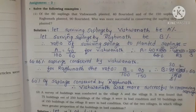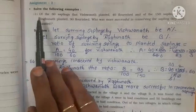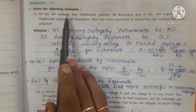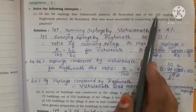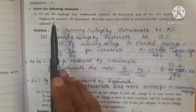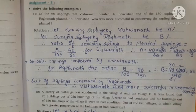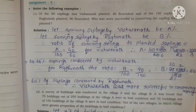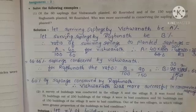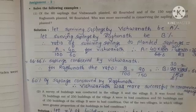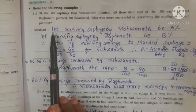Now children, let's solve some examples. Of the 60 saplings that Vishwanath planted, 40 flourished. And of the 150 saplings that Ragunath planted, 90 flourished. Who was more successful in conserving the saplings they had planted? This sum is similar to the example we have seen. Let's solve.